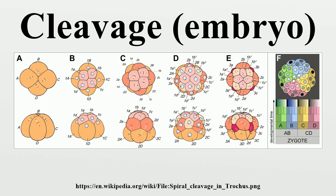Cleavage ends with the formation of the blastula. Depending mostly on the amount of yolk in the egg, the cleavage can be holoblastic or meroblastic. The pole of the egg with the highest concentration of yolk is referred to as the vegetal pole, while the opposite is referred to as the animal pole. Cleavage differs from other forms of cell division in that it increases the number of cells without increasing the mass, meaning that with each successive subdivision, the ratio of nuclear to cytoplasmic material increases.